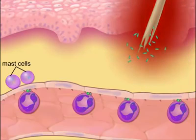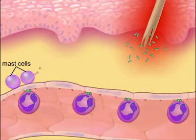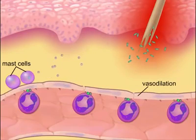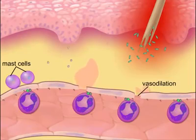The inflammatory mediators released by the injured tissue bring about changes in the environment that cause mast cells to degranulate and release histamine. Histamine causes vasodilation and an opening of the junctions between the endothelial cells, allowing fluid and leukocytes to leave the capillary and enter the infected tissue.